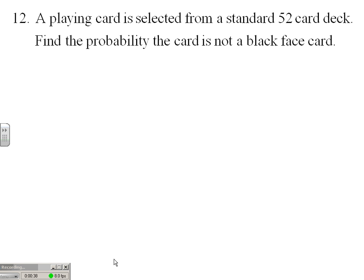Typically in probability we try to deal with how many ways can I win out of how many things can happen. Clearly on this problem there are 52 possibilities, and almost always the denominator on a probability problem is harder to find. So in this case we're just going to exhaust the possibility of winning cards.